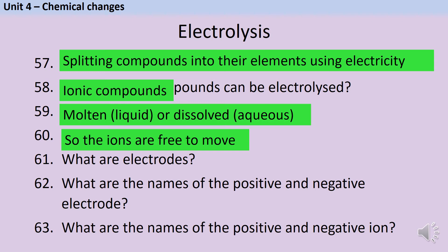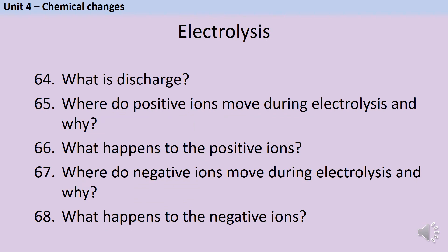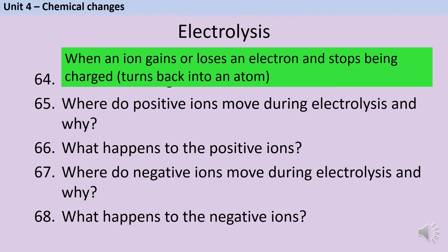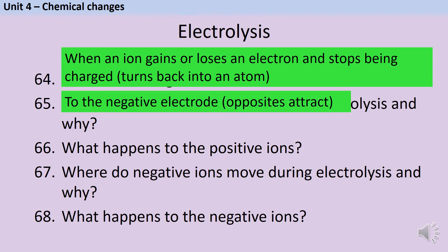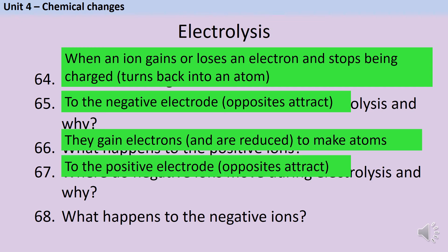The electrodes are the inert conducting rods which supply the current to the electrolyte. In electrolysis, the positive electrode is the anode and the negative electrode is the cathode. The positive ion is the cation and the negative ion is the anion. Discharge is the process of charged particles becoming neutral — it happens when an ion gains or loses electrons. The positive ions move to the negative electrode because opposites attract, where they gain electrons — in other words they are reduced — and turn back into neutral atoms. The negative ions move to the positive electrode, where they lose electrons to become uncharged atoms.